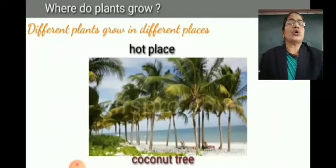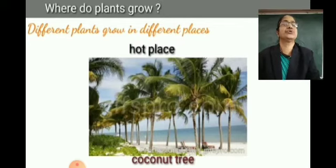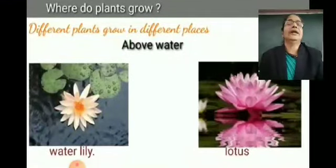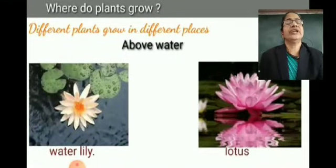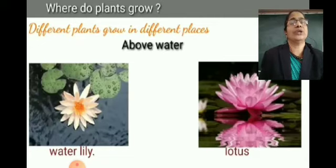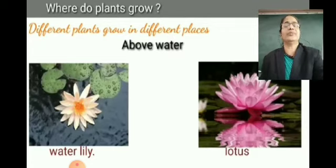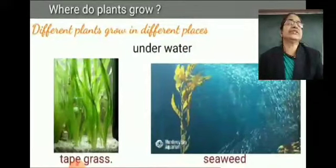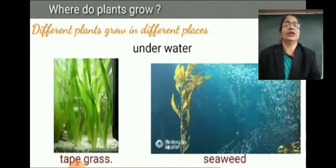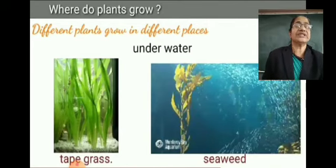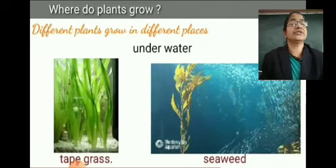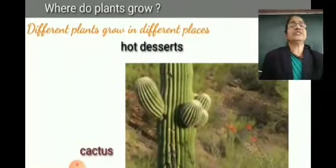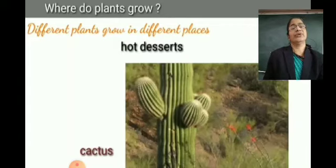Coconut tree needs hot places to grow. Above water, water lily and lotus grow. Under water, tape grass and sea weed grow — you can see the image here, though it is not given in your textbook. In hot deserts, cactus grows. You can see cactus in the desert only.